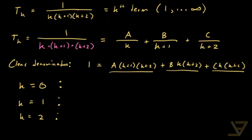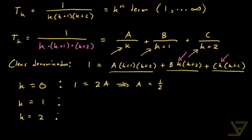If we have k = 0, then the B and C terms vanish, so all we're left with is 1 = 2A, which implies A = 1/2. I just want to make it clear: this is not entirely rigorous, because we're substituting values which make the denominators zero, but it does end up working out — so we're using a pseudo-rigorous method.